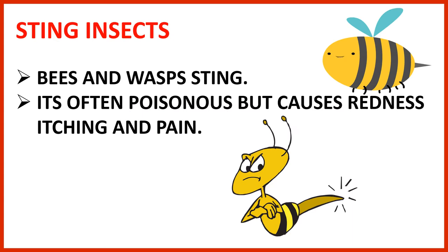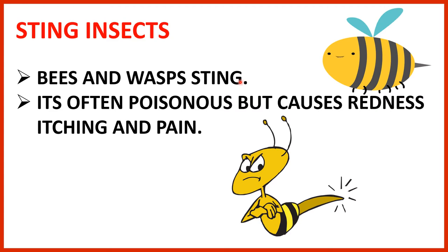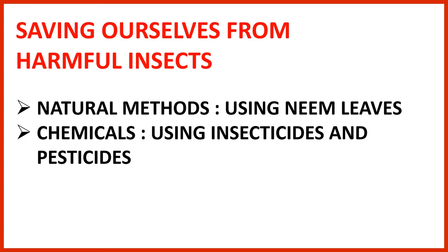Now, here are the stinging insects. Stinging insects are insects that sting. By now you might have guessed — bees and wasps are insects that sting. Mosquitoes also sting and it is often poisonous, but mainly causes redness, itching, and pain when these insects sting us.